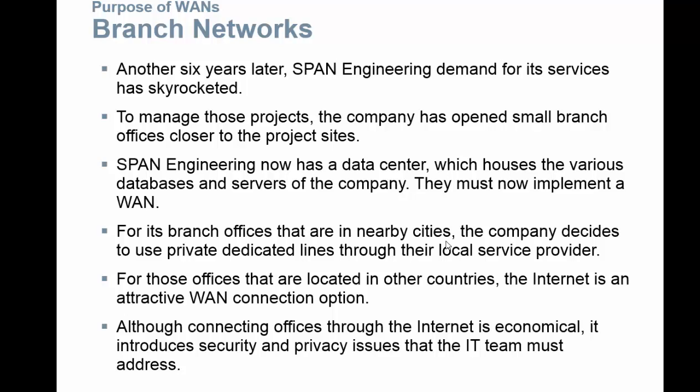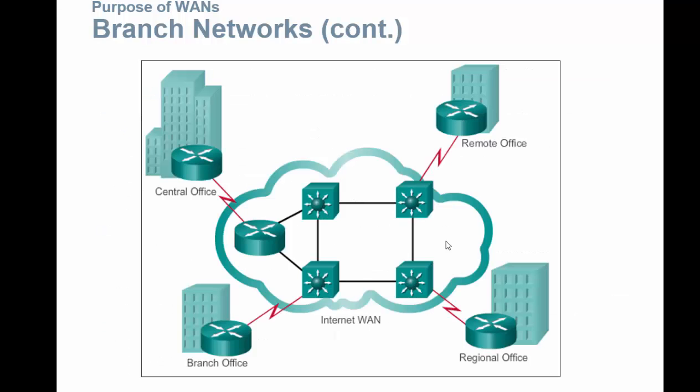Now let's look at the branch networks. Jumping ahead another six years, SPAN Engineering has grown dramatically — many more employees and more locations, not just in one city. To manage these projects, the company has opened small branch offices and a data center housing various databases and servers. They must now implement a WAN. Branch offices are in nearby cities but not the same location, so the company uses private dedicated lines through their local service provider. For offices located in other countries, the internet is what they use for their WAN.